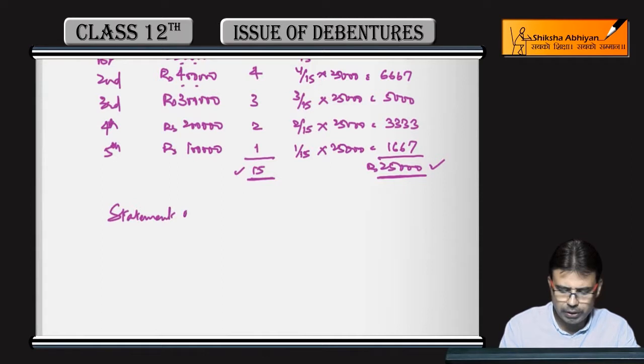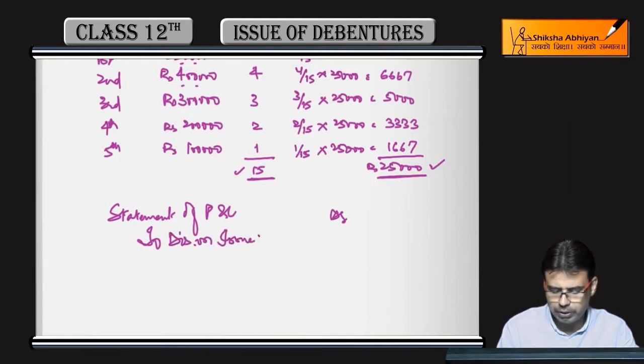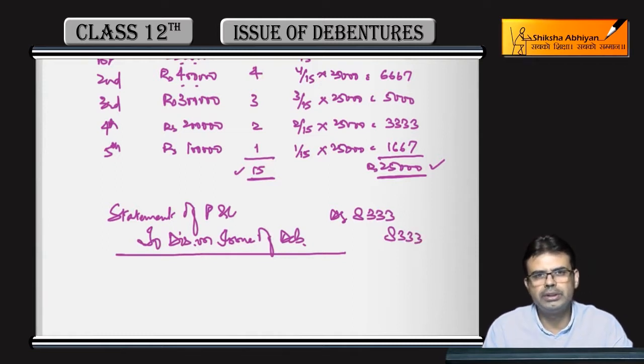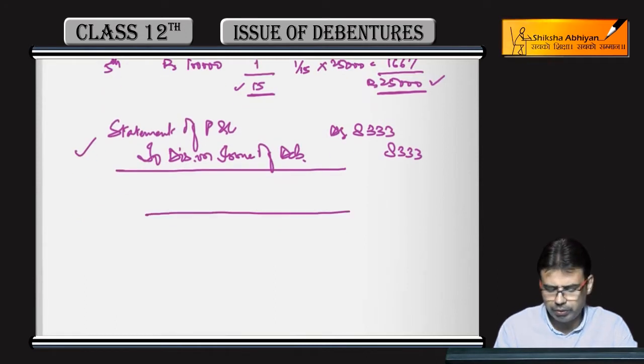Statement of Profit and Loss debit to Discount on Issue of Debentures. First year Rs. 8,333, second year Rs. 6,667, third year Rs. 5,000. The entry remains the same, amounts keep changing, and the account will be prepared in exactly the same manner.